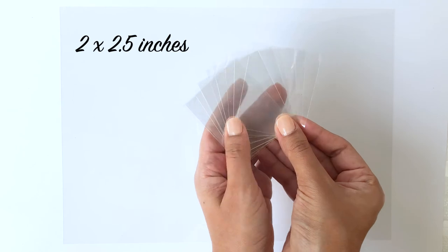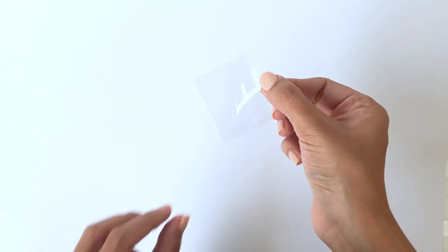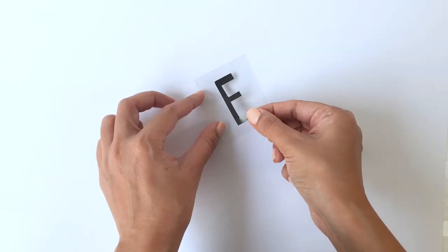Take another piece of the transparent plastic sheet and cut tiny pieces in the given dimensions. Peel off the stickers and stick them right between each and every piece.